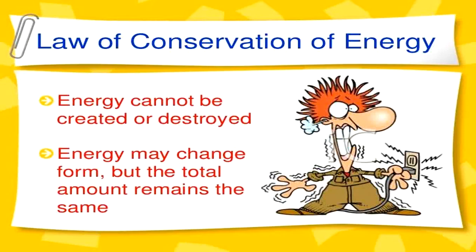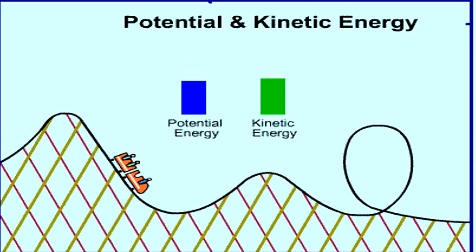It can change its form, though. Let's take an example of a roller coaster moving. For example, when it moves above the hill, it gains potential energy. And when it is moving down the hill, it is gaining kinetic energy.